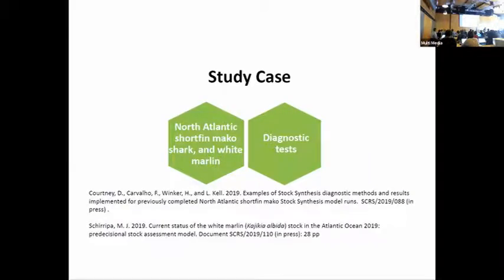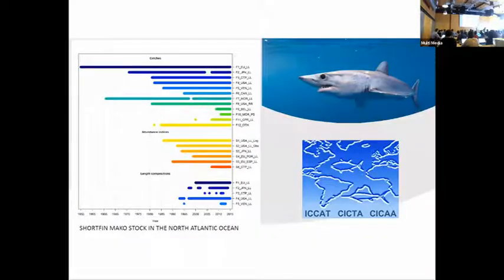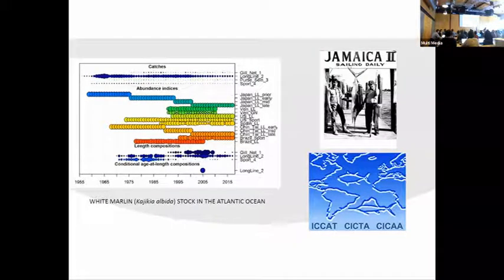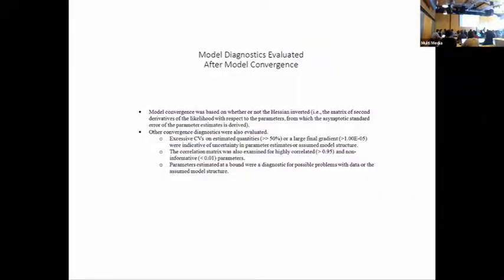Our case studies were from the ICAT recent shortfin mako assessment and a striped marlin assessment. The data that we use in these models is data-moderate - we don't have any age data but we have a long history of catches, catch per unit effort from the fleets, and in this case length composition for the shortfin mako. The white marlin has similar data: catches, abundance index - we're using areas as fleets so that if they have similar length composition we assume that they have similar removal selection length, and they also had conditional length at age here.